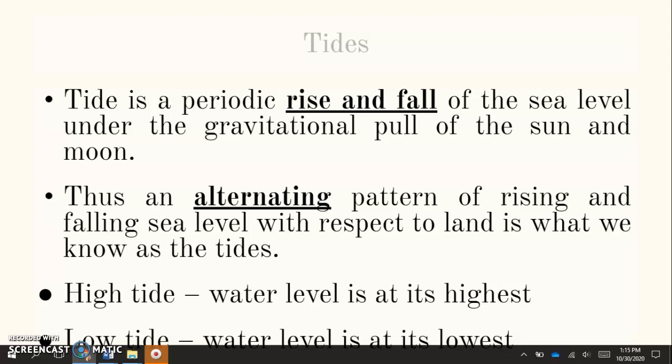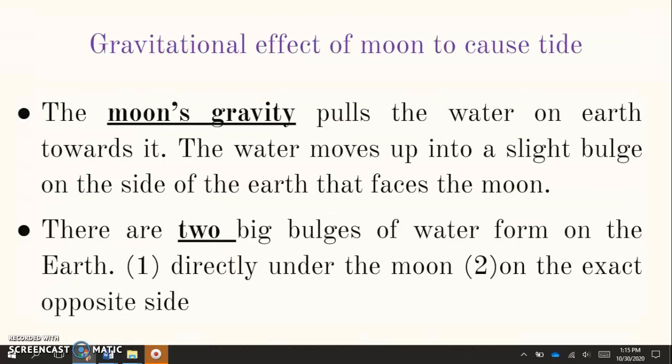And during high tide, the water level is at its highest and during low tide, it's at its lowest. So the moon's gravity will pull the water on earth towards it and the water moves up into a slight bulge on the side of the earth that faces the moon. And remember, this also happens on the opposite side of the earth. So there are two big bulges of water on the earth, one directly under the moon and one on the exact opposite side. And remember, these are called the tidal bulges.